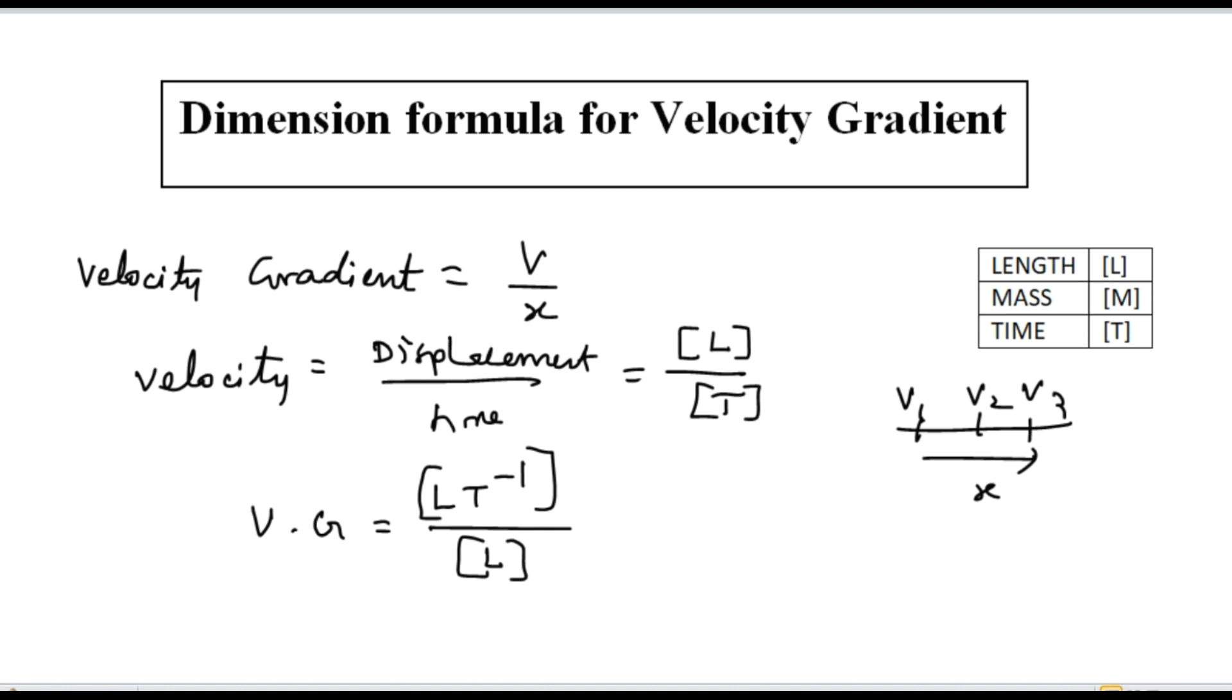If we take the L to the top, it is going to be [L^+1] and [L^-1] and then [T^-1]. So they get cancelled and we get [T^-1].